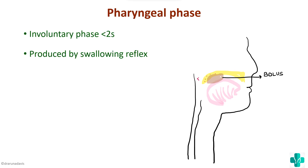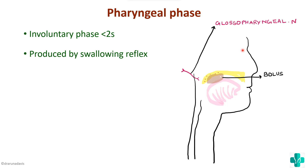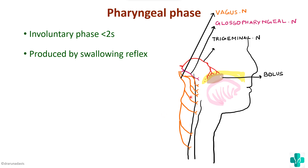Next we have the pharyngeal phase. It is an involuntary phase which takes less than 2 seconds and it is produced by the swallowing reflex — that is why it is involuntary. When the bolus of food reaches the back of the mouth, there are mechanoreceptors in the pharyngeal region which get activated. This sends impulses via the glossopharyngeal nerve, the trigeminal nerve, as well as the vagus nerve, which in turn stimulate the swallowing centre or the deglutition centre.